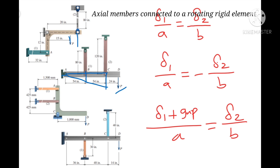In another problem, when we apply a load P, point C goes down and point A goes to the left, forming two triangles. In this case one rod elongates and the other shortens, so we have the elongation of rod 2 divided by BC equal to negative the elongation of rod 1 divided by AB.